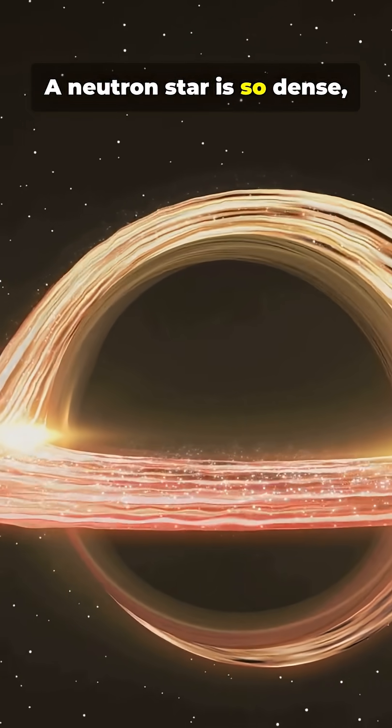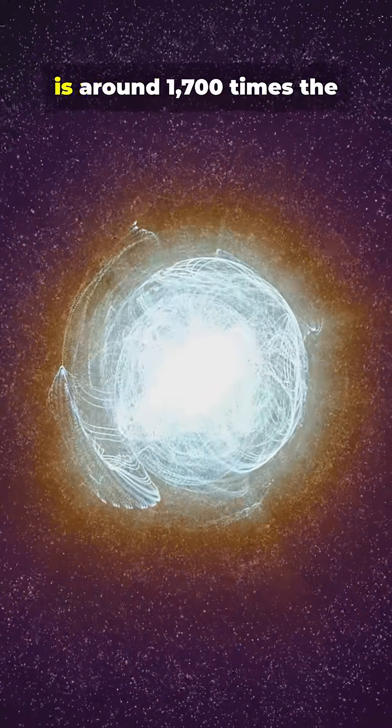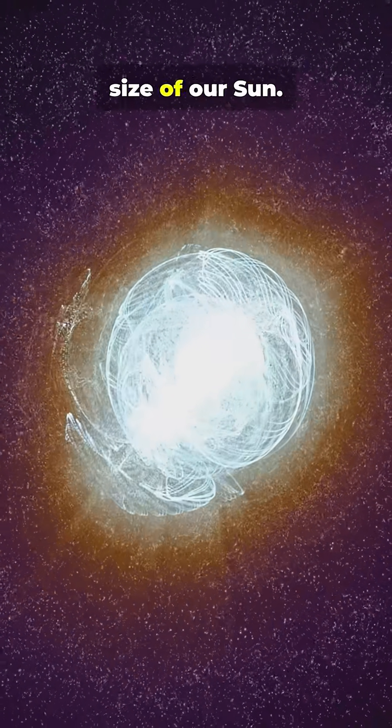A neutron star is so dense a teaspoon would weigh a billion tons. The largest known star, UY Scuti, is around 1,700 times the size of our sun.